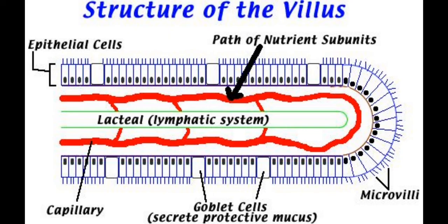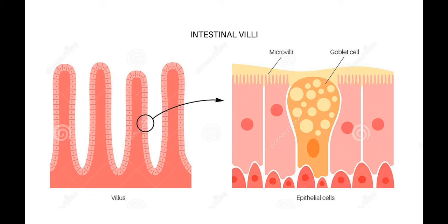If you eat too much cellulose, which we cannot digest, it can scratch the surface inside the gut and destroy the mucus layer, causing big problems. So cellulose is not good food for us. The goblet cells are the cells that produce this protective mucus layer.